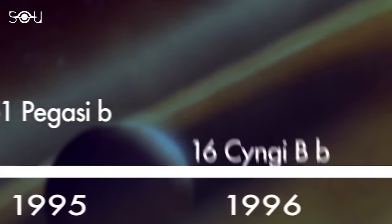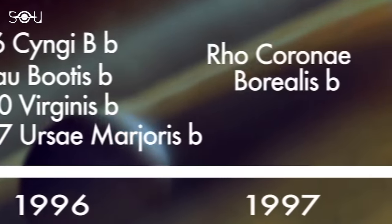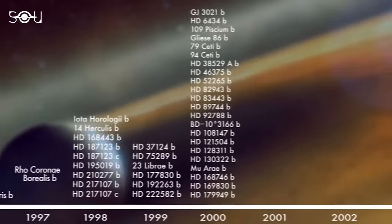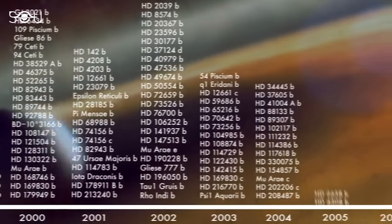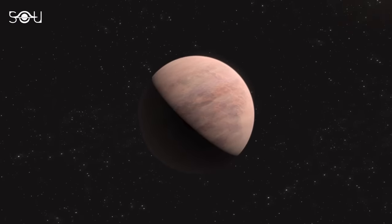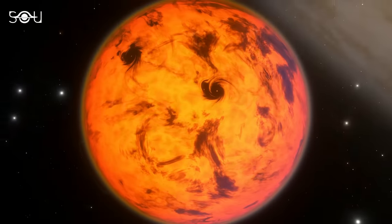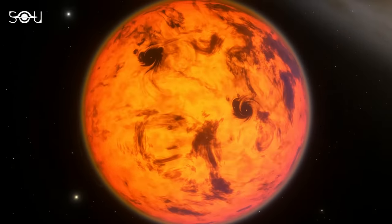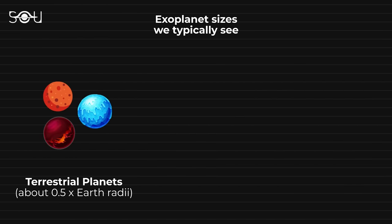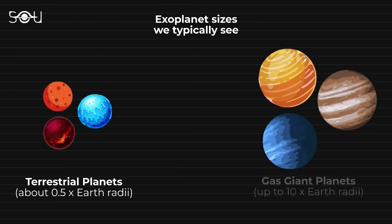Since the initial detection of exoplanets in the 1990s, our exploration of the cosmos has been relentless. We have encountered an astonishing variety of exoplanets, ranging from rocky worlds similar in size to Earth to massive gas giants like hot Jupiters. These planets exhibit a wide range of radii, with terrestrial planets typically measuring half the size of Earth and gas giants reaching up to ten times Earth's radius.